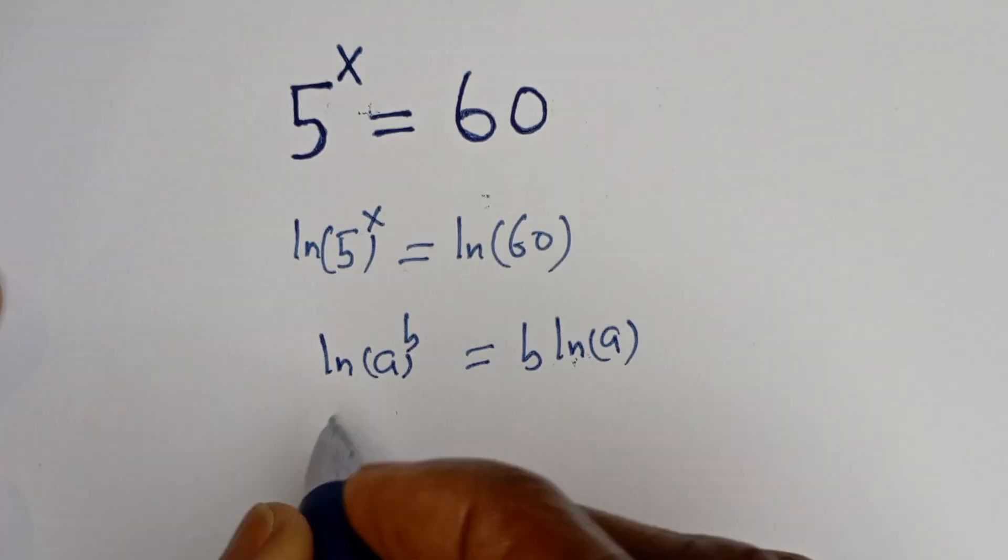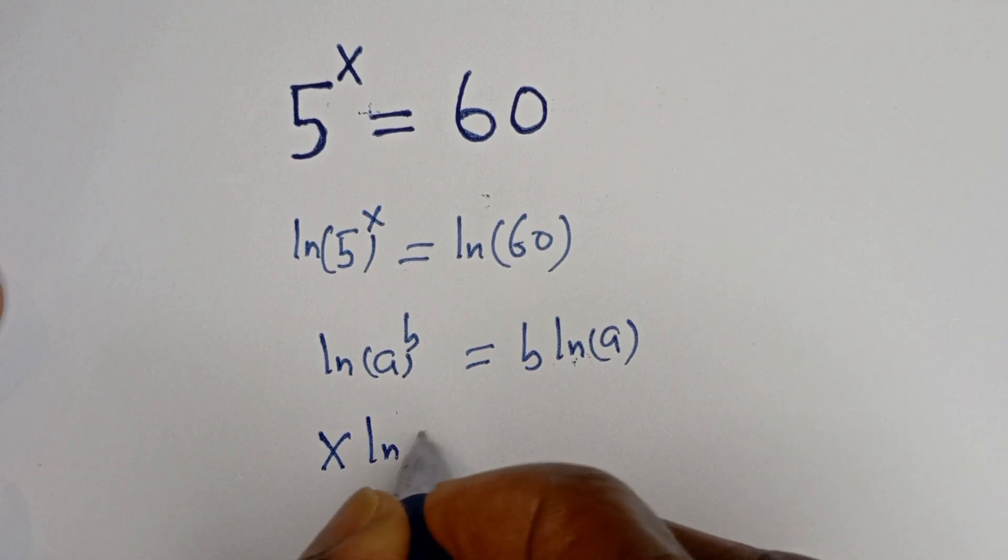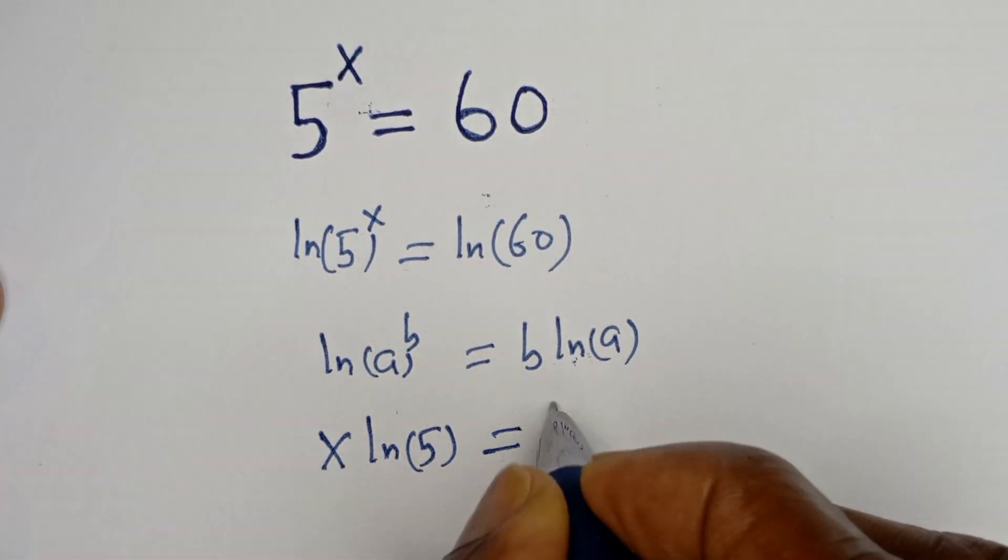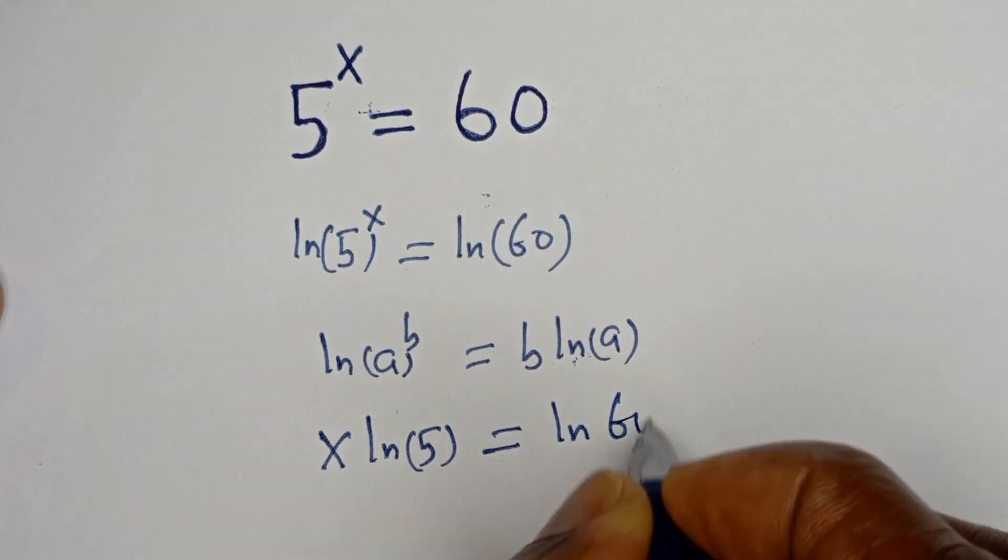This can be written as x ln of 5 is equal to ln of 60.